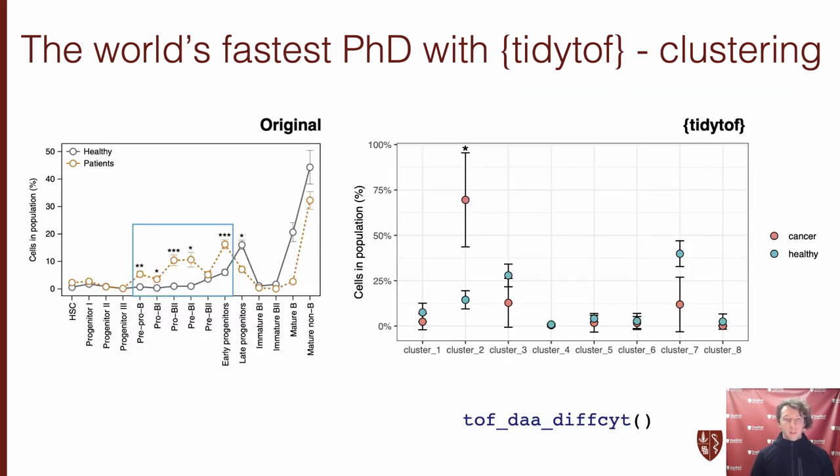Using one of our differential abundance analysis verbs, I was then able to perform a statistical analysis to see that that same cluster, cluster 2, is heavily expanded in cancer patients relative to healthy patients. This looks pretty similar to the results from the original study, which identified five populations of expanded cells in cancer patients relative to healthy patients, and in fact it looks like what we've done by using a different clustering method is essentially lump all of those expanded clusters into one single group. So at least to me, this looks like so far so good.